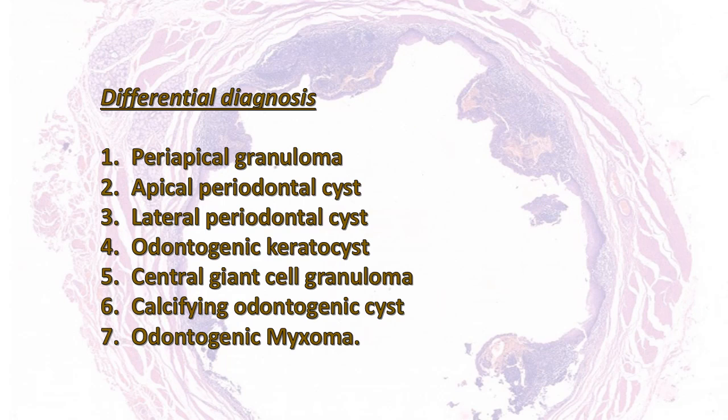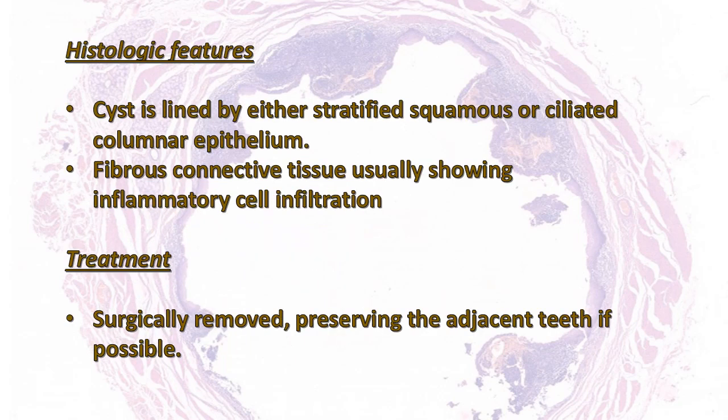The differential diagnosis includes periapical granuloma, apical periodontal cyst, lateral periodontal cyst, odontogenic keratocyst, central giant cell granuloma, calcifying odontogenic cyst, and odontogenic myxoma. Histological features: the cyst is lined by either stratified squamous or ciliated columnar epithelium, and the fibrous connective tissue usually shows inflammatory cell infiltrate. Treatment: it is surgically removed, preserving the adjacent teeth if possible.